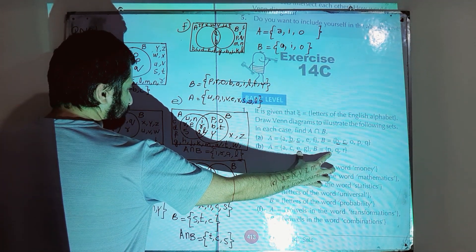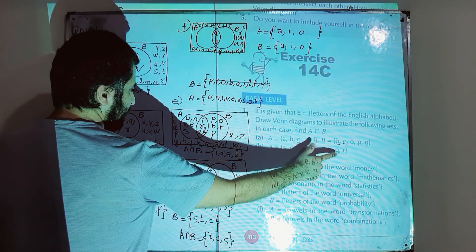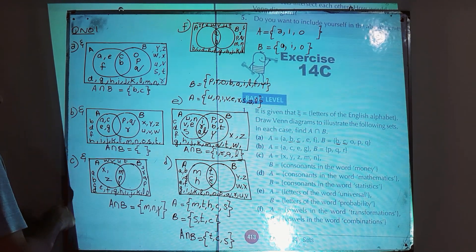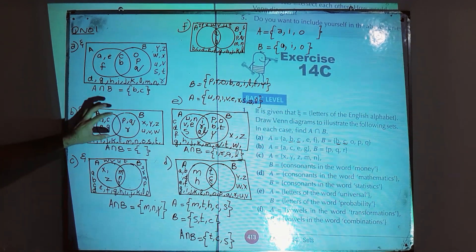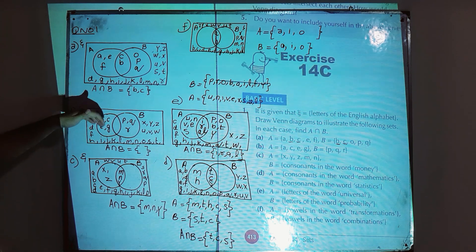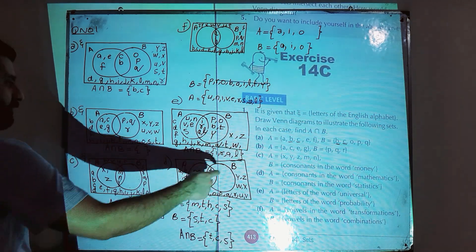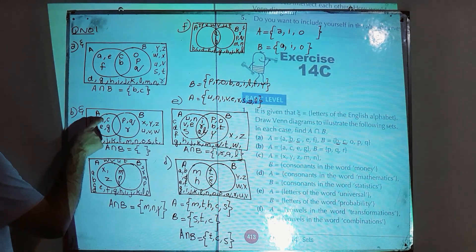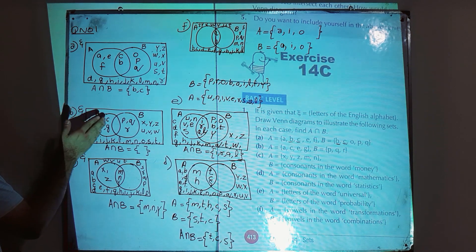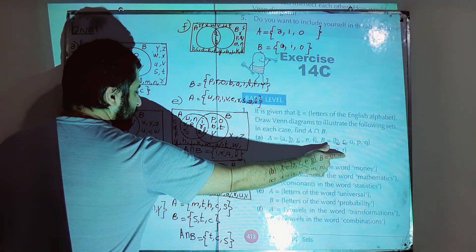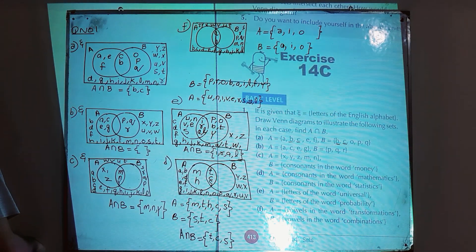Observing sets A and B for part b, we don't have any common elements — the elements of A and B are completely different. So the overlapping part will be empty; no element belongs to it. We write the elements of A — a, c, e, g — in the section that only belongs to A, and the elements of B — p, q, r — in the section that only belongs to B.